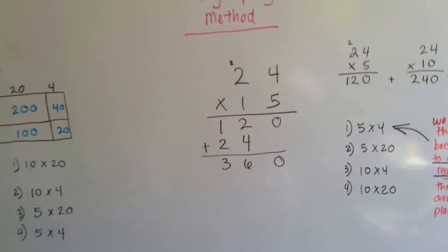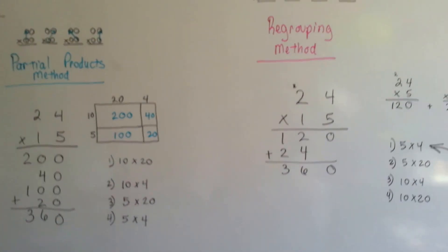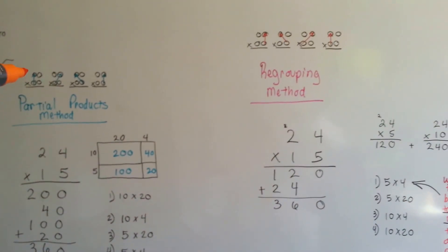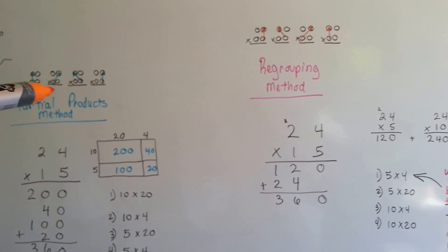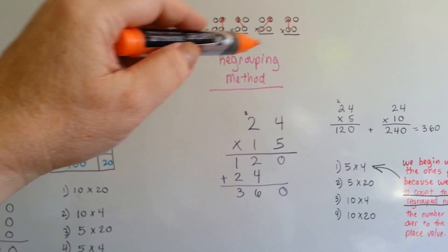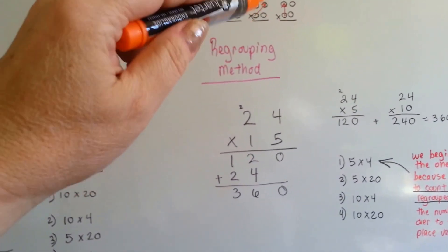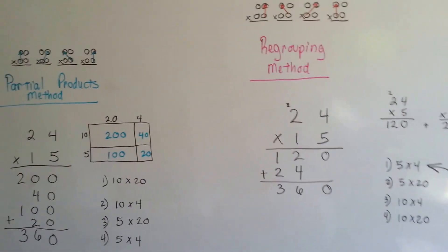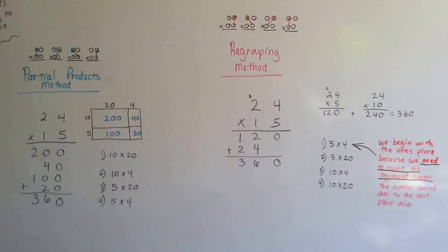And that is the difference between regrouping and partial products. Just remember that where this one starts on the outside and ends on the outside and has a little hill in the middle, this one starts on the inside and ends on the inside and has a V in the middle. You can decide which method you like best.